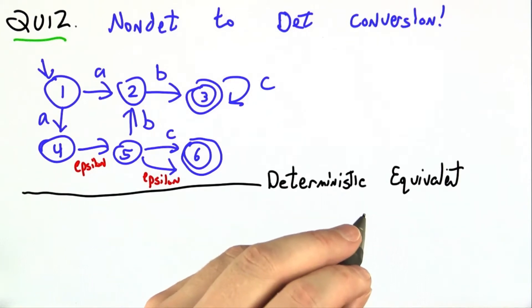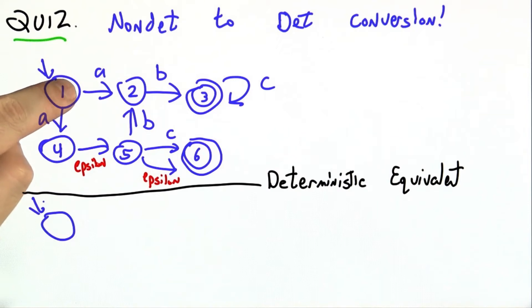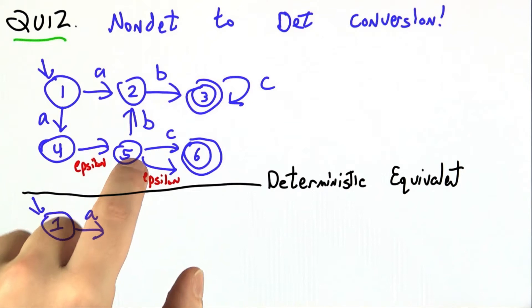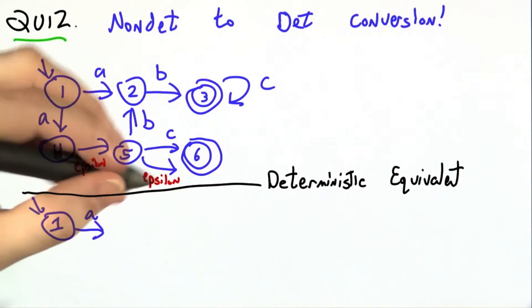And I'll start making its deterministic equivalent down here. Well, when we enter the non-deterministic machine, we could only be in state 1. But after that, we could see an A, and if I see an A, I could be in 2, 4, or I could take the free epsilon transition to 5, or I could keep going and take the free epsilon transition to 6.